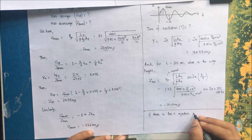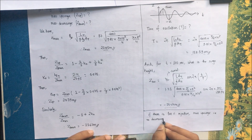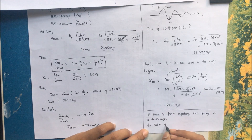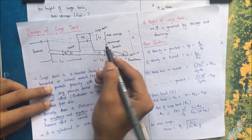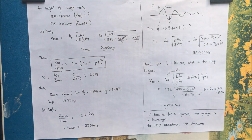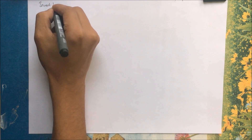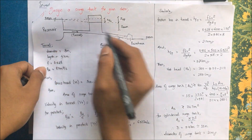Note: if there is 100% load rejection, there will be maximum upsurge and no downsurge. For 100% load acceptance, there will be maximum downsurge — the water level in the surge tank drops to its lowest. Invert level is the base interior level of a pipe, trench, or tunnel — considered as the floor level — and is an important datum for determining the flow line of a piping system.